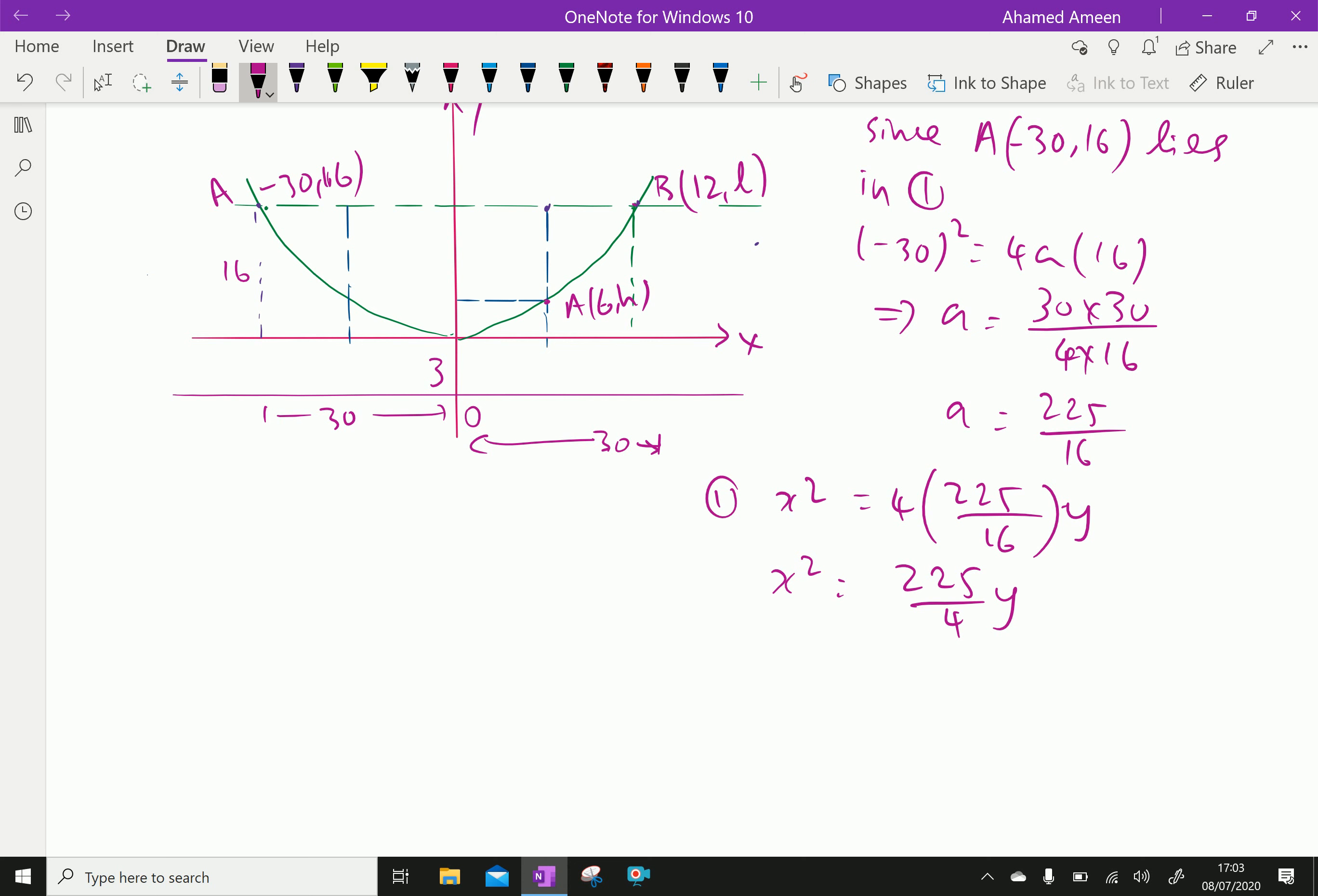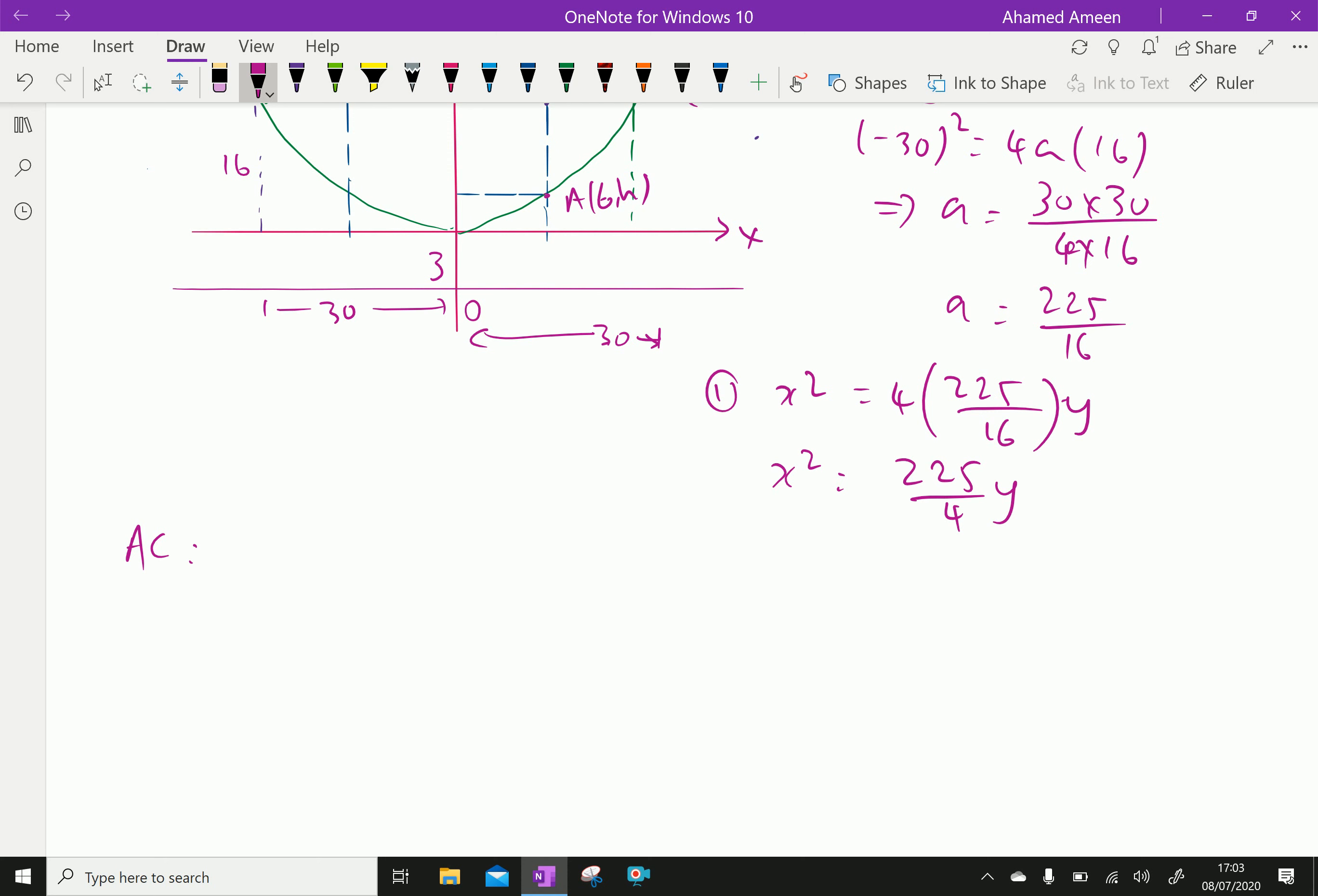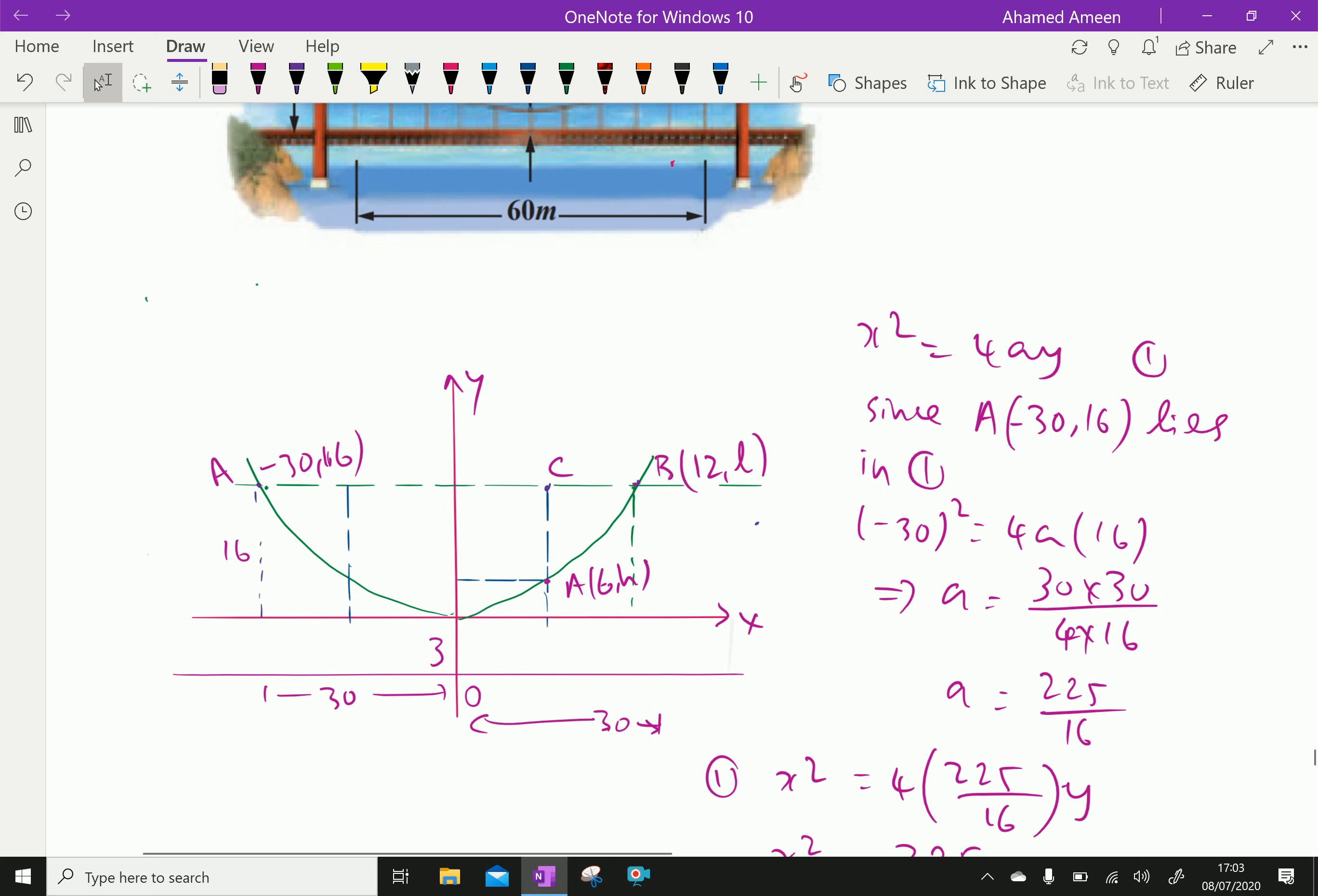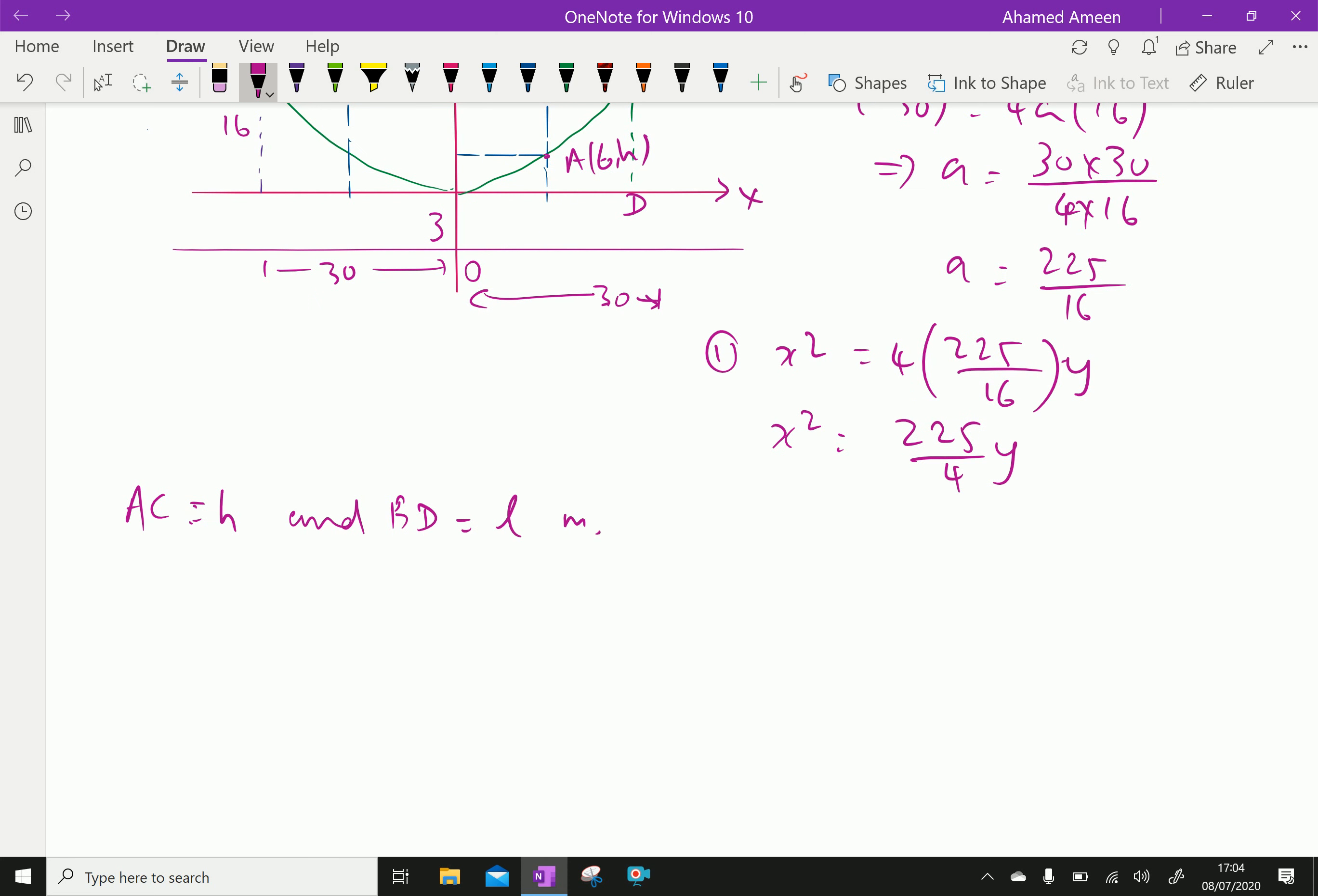Now, AC equal, let AC is equal to h. That means here, the first, this point to this point A is equal to h. And BD equal l meter, height is l meter.